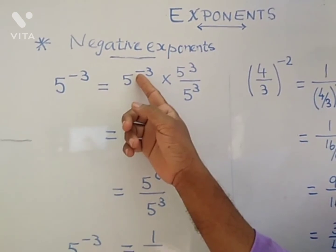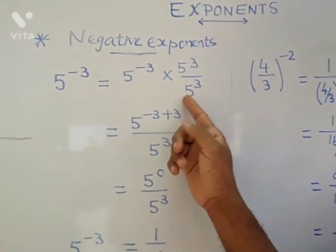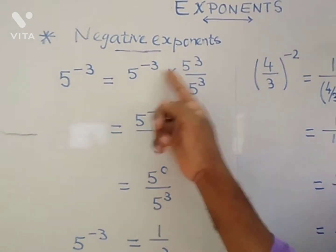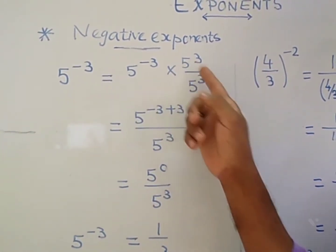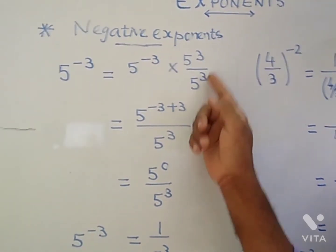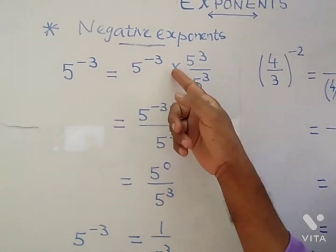Five power minus three. You can multiply and divide by five power three. You can multiply by the base, by five power three.